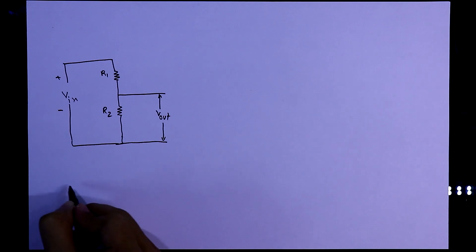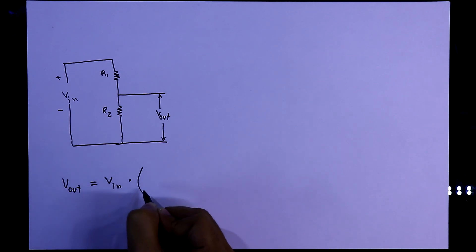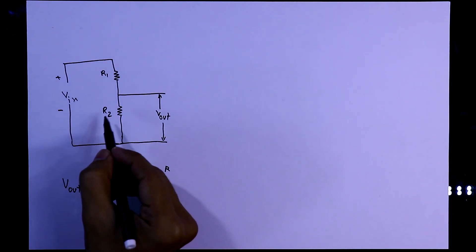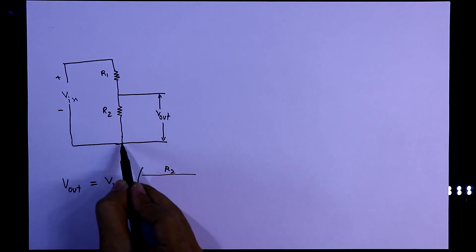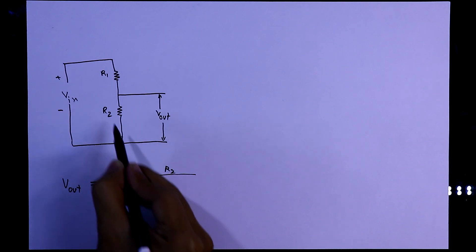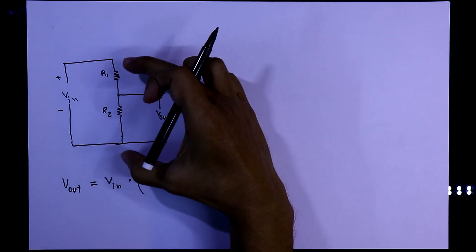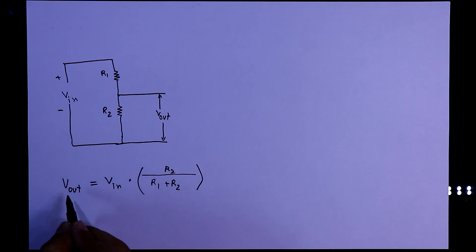So we have the equation Vout equal to Vin multiplied by, here as we have to find out this voltage, so we have to take R2. And this R2 is from ground to this output point divided by total resistance of the circuit. That is R1 plus R2. So with this equation we will get the Vout voltage.